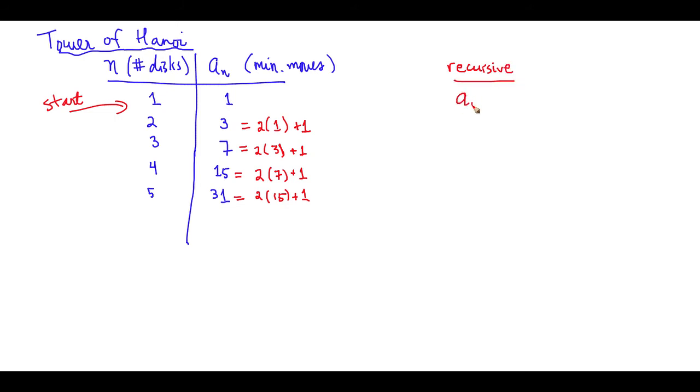For any a sub n, any minimum number of moves, if you want to know what is the minimum number of moves for n disks, you take the previous minimum number of moves for n minus one disk, multiply that by two, just as what we're doing here, and then adding one to it.